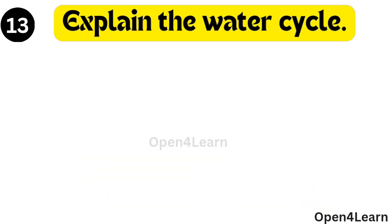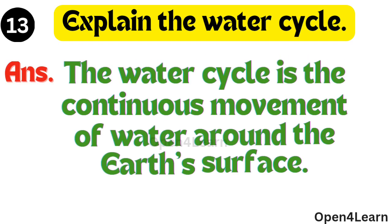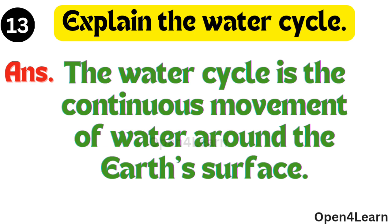Question, explain the water cycle. Answer, the water cycle is the continuous movement of water around the earth's surface.